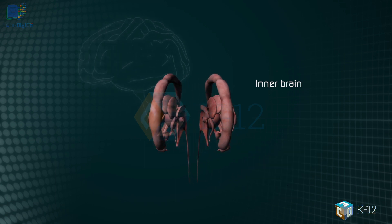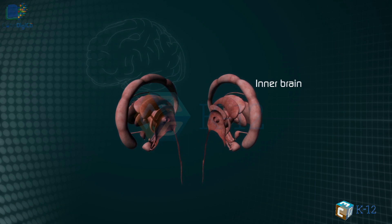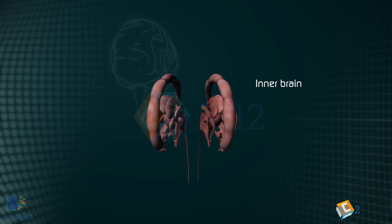Like the lobes in the cerebral hemispheres, the structures described below come in pairs. Each is duplicated in the opposite half of the brain.